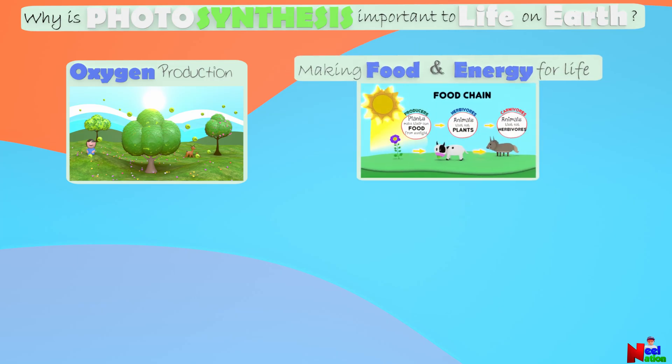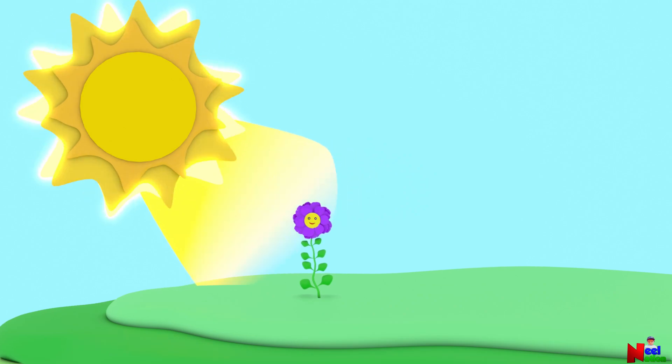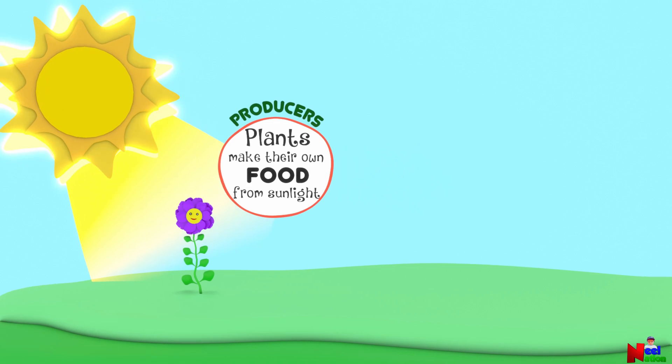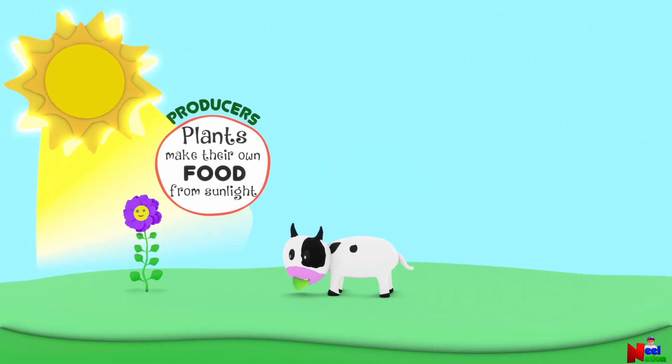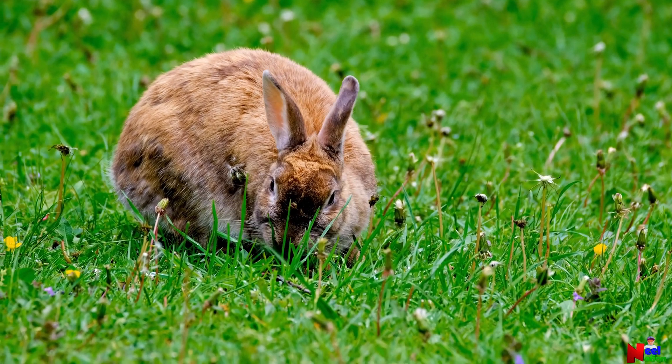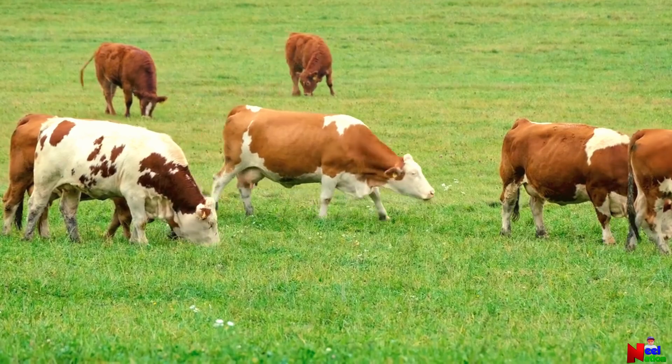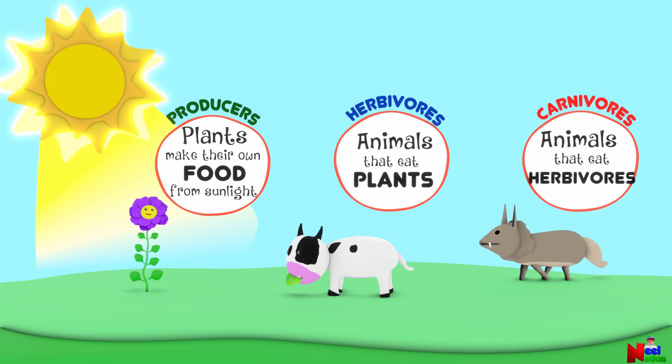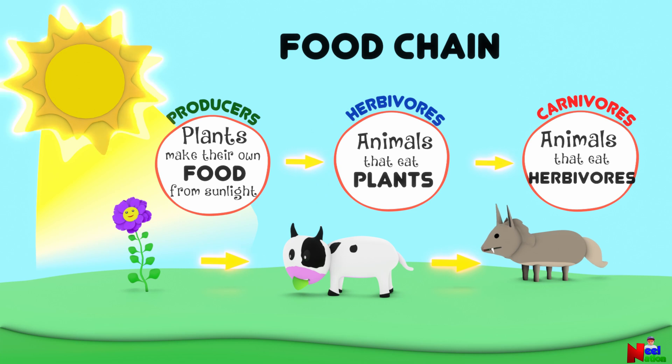Making food and energy for life. Plants are the starting point for all food on earth, because they make their own food through photosynthesis. So plants are also called producers. This process not only nourishes the plants, but also provides food for other living things. Herbivores like cows and rabbits eat plants directly. While carnivores like lions eat animals that feed on plants. This flow of energy, starting with plants, forms the foundation of the food chain. Ensuring that all living things have the nourishment they need to survive.